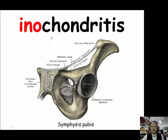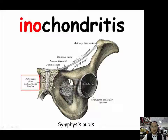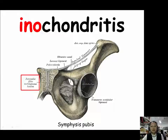Enchondritis is inflammation of fibrocartilage, like in the symphysis pubis. When inflammation happens to the fibrocartilage in this part of the body, it is called enchondritis.